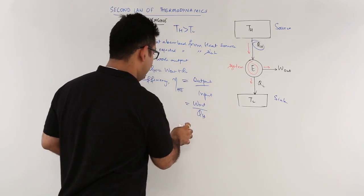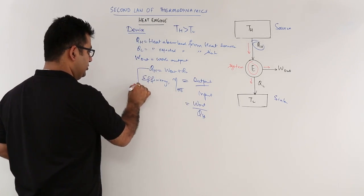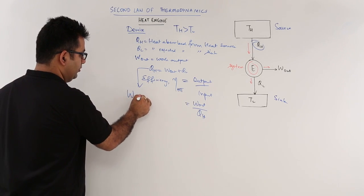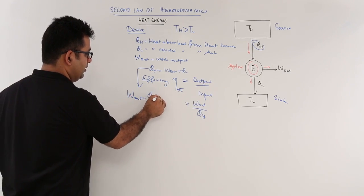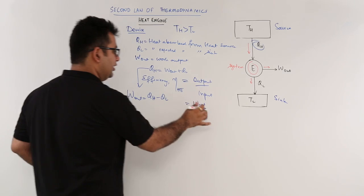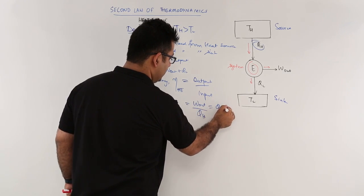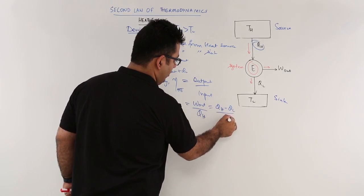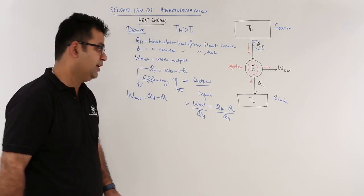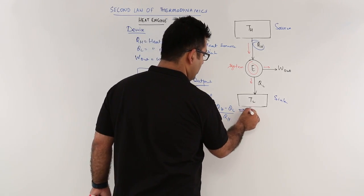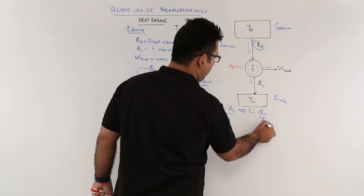So if you replace the value of Wout, Wout from this equation becomes QH minus QL, so you put it there. It becomes QH minus QL upon QH. So this gives rise to 1 minus QL upon QH.